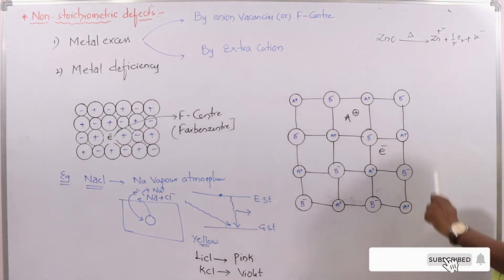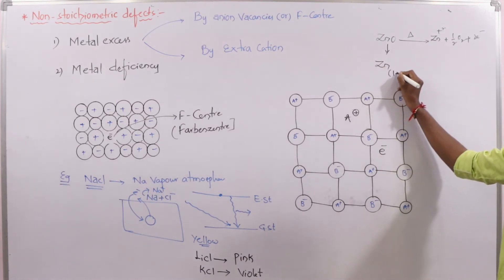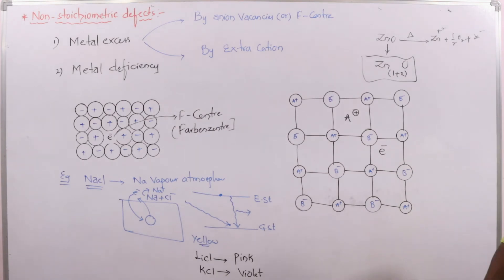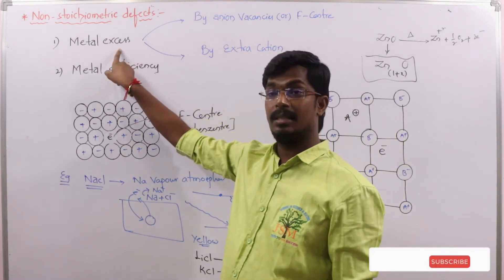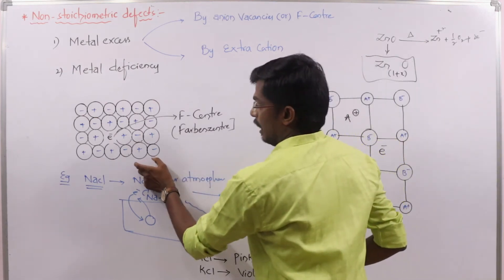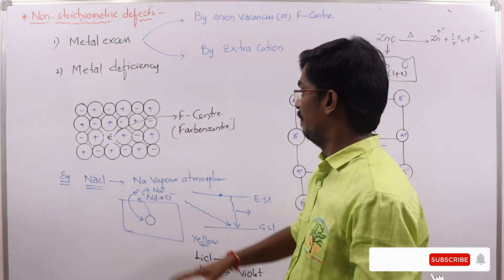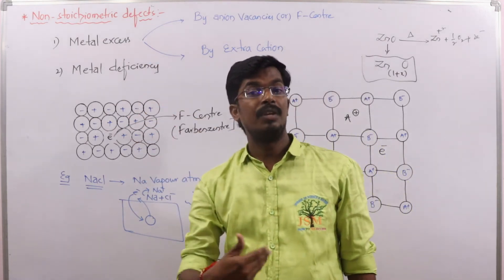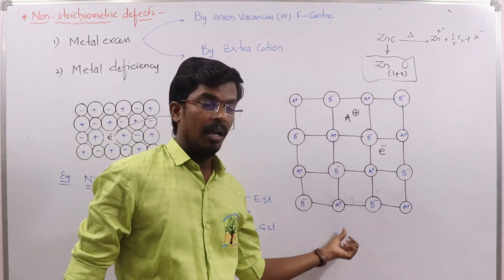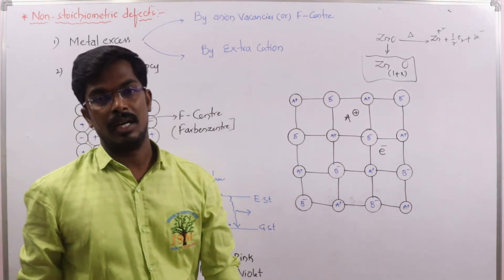For example, zinc oxide ZnO when heated produces Zn²⁺ and O₂ plus 2 electrons. The Zn²⁺ occupies an interstitial site of the ZnO crystal, so the ideal formula becomes Zn₁₊ₓO — a non-stoichiometric formula. Metal excess by anion vacancy is similar to the Schottky defect, while metal excess by extra cation is similar to the Frenkel defect.